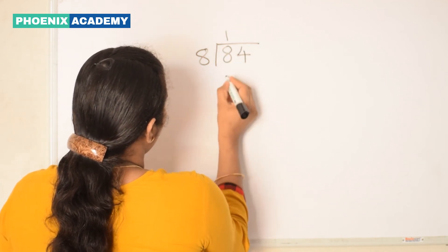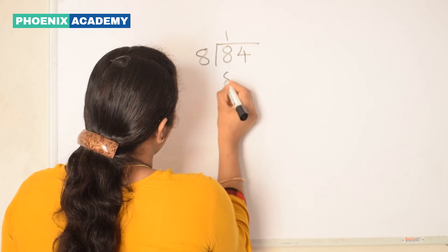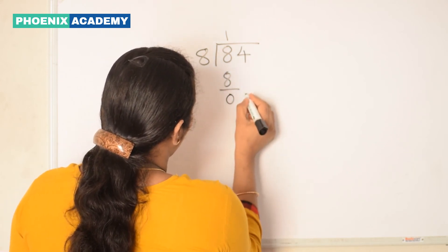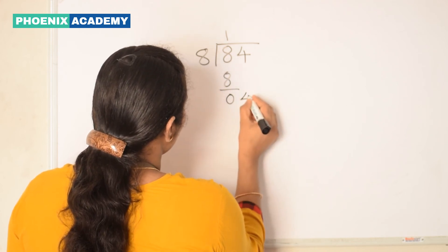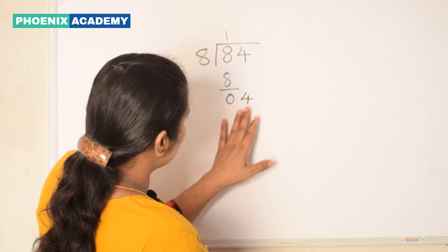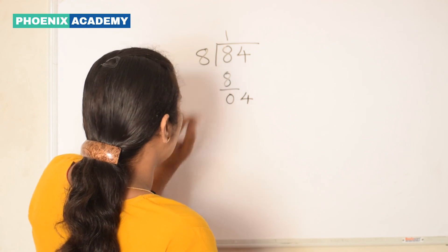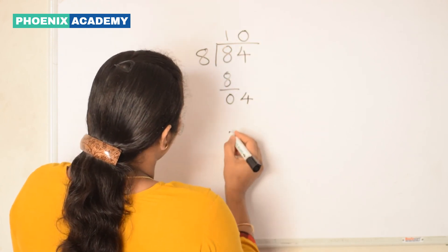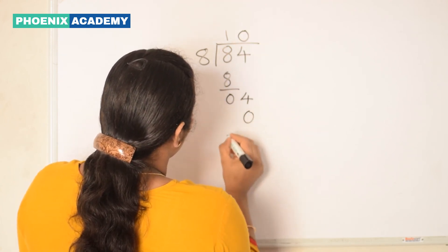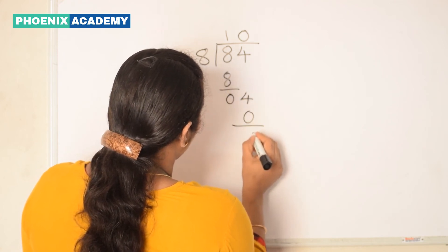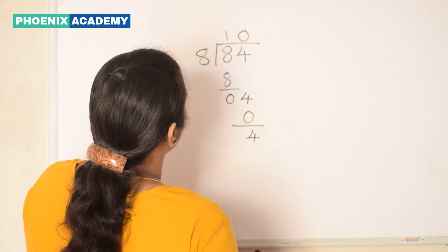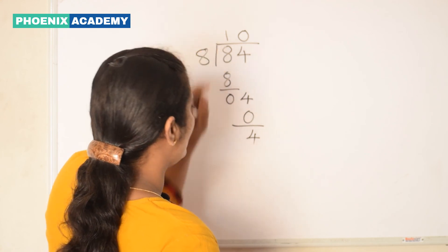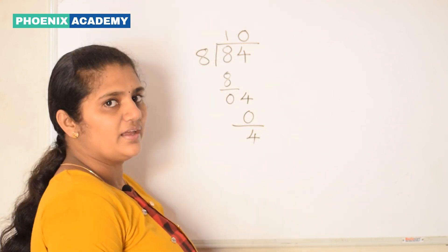Now let us divide 84 by 8. We know 8 1s are 8. Subtract, we get 0. Bring down the value in the 1s place: 4. Since 4 is less than 8, we put 0 here and subtract 0 from 4, giving 4. So here we get 10 as the quotient and 4 is the remainder.